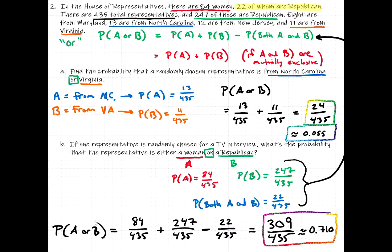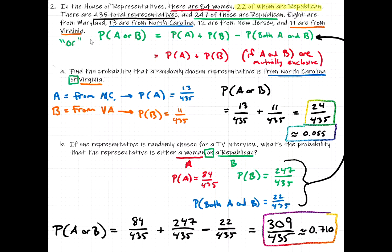I added a lot of detail here, but working it out on paper might not take so long. The important point is knowing how to choose what rule to use. The keyword 'or' told us to use the addition rule, and then we had to determine whether or not the third term applies — that is, whether or not the events are mutually exclusive.